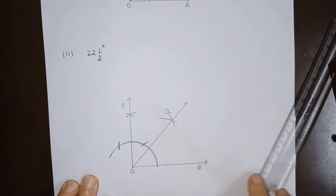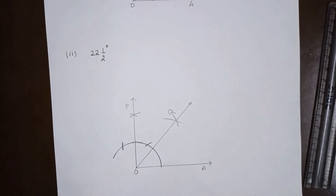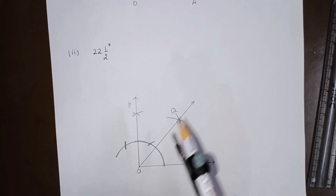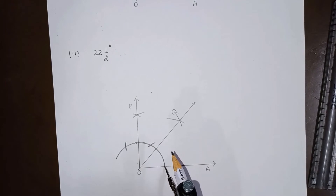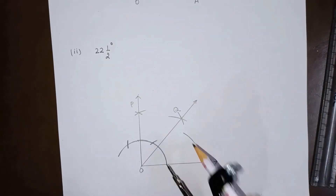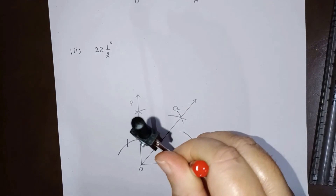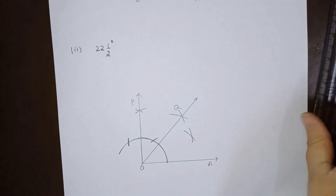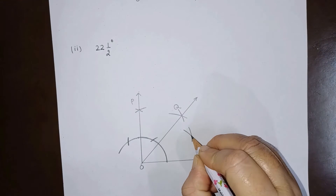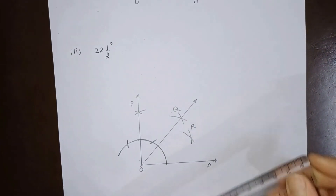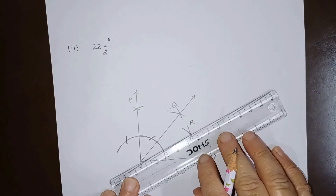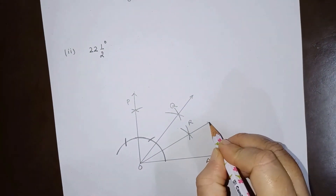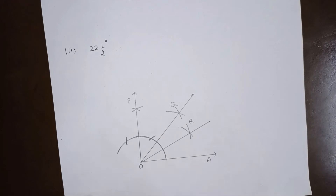22 and a half is half of 45 degrees, so to make 22 and a half we have to bisect angle AOQ. To bisect it, we will keep the compass here and draw one arc, then with the same radius keeping the compass at this point we will draw another arc. Let this point be R. When O and R are joined, we get angle AOR.